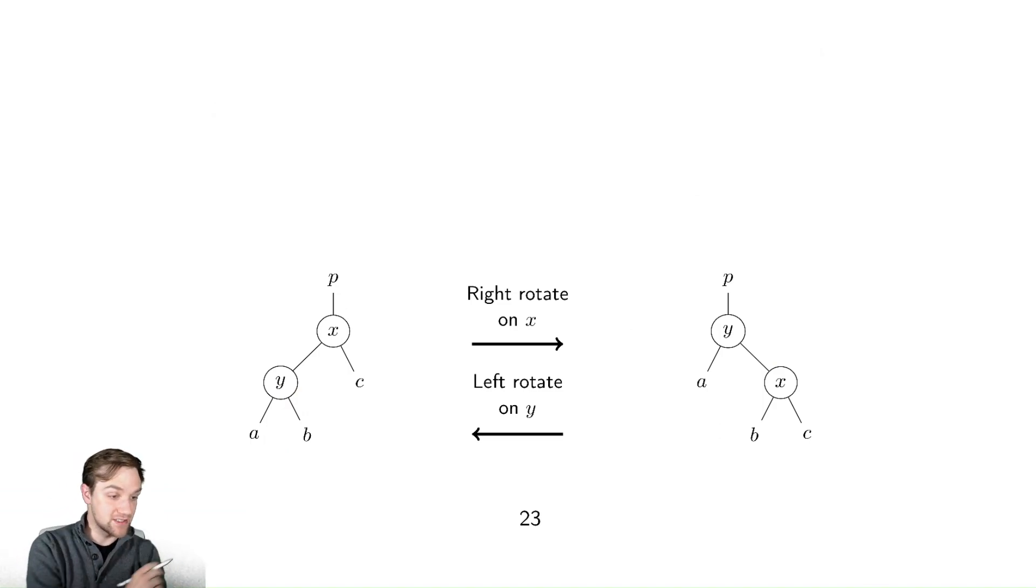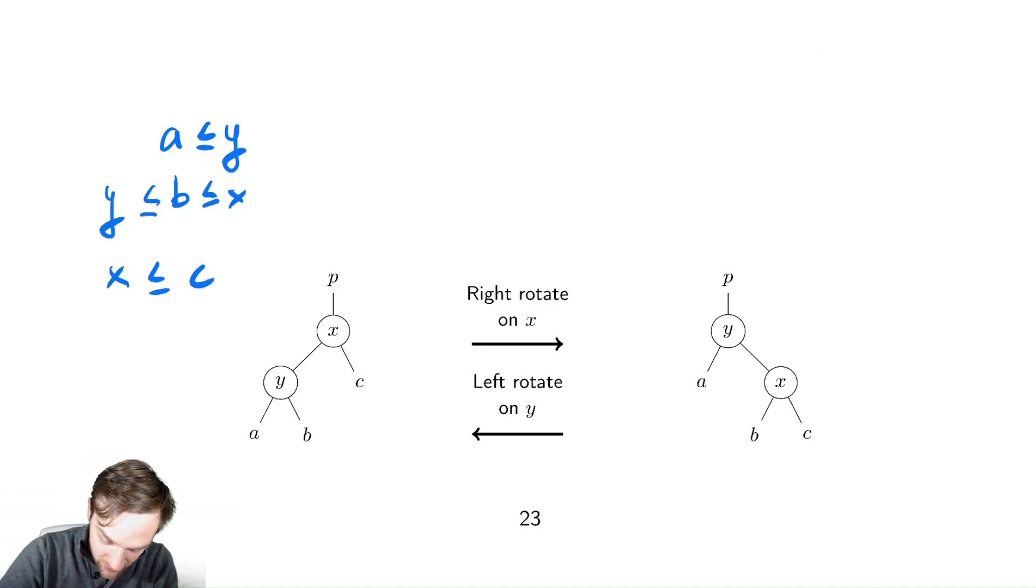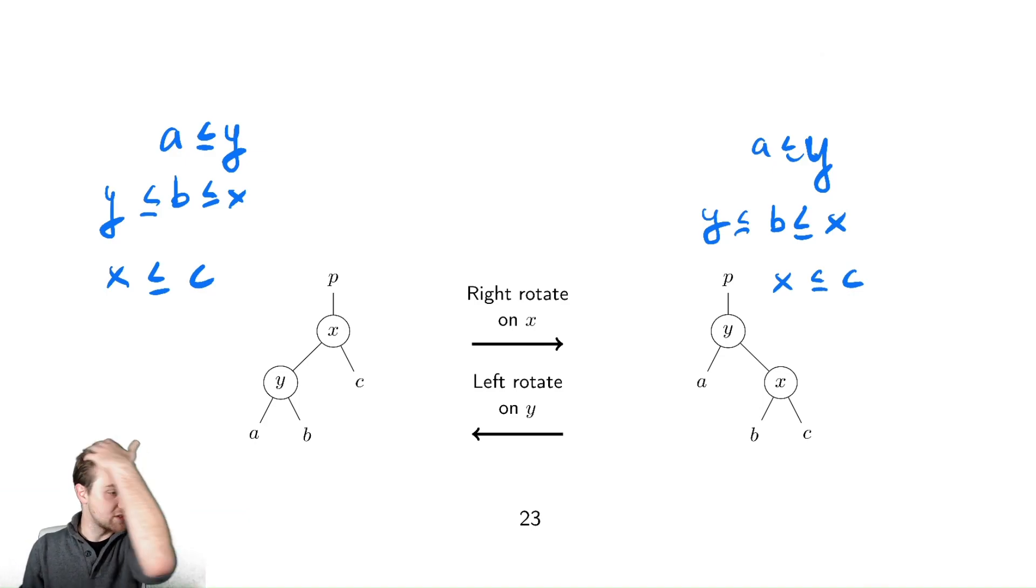Let's verify mathematically that this is okay. In this example, on the left, a is less than or equal to y, b is between x and y, and c is bigger than x. On the right tree, let's verify that all those things are true. Well, we have that a is less than or equal to y, because it's its left child. We have that b, because it's to the right of y and left of x, that has to be between x and y. And what about c? Well, c is still bigger than x, so we didn't break anything. We can maintain our binary search tree property, so that's very good.